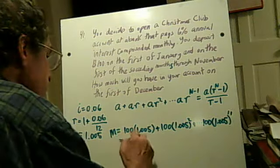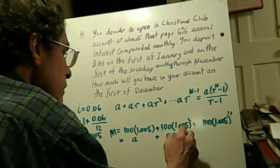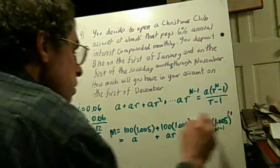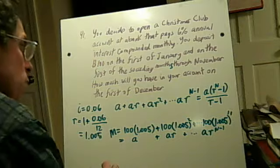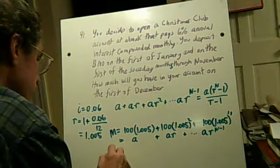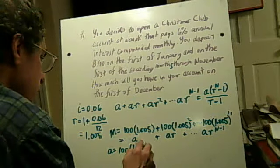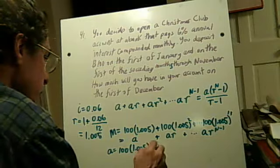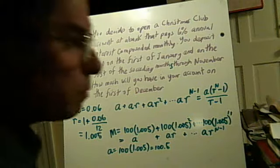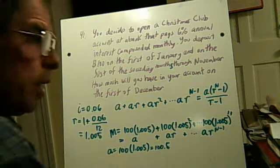Now, we want this to be equal to a plus ar plus dot dot dot ar^(n-1). Well, a is going to equal to 100 times 1.005. That's equal to 100.5. That's just the first term in the series. The r in the series turns out to be 1.005. We've got that.